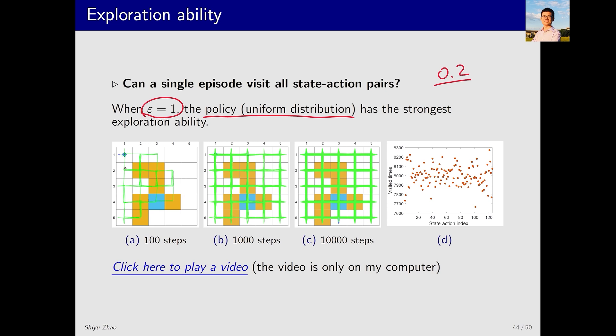Let's generate an episode based on the policy from here. If the episode consists of only 100 steps, we see that many states can be visited. With 1,000 steps, almost all states and their corresponding actions can be explored. With 10,000 steps, the states and actions can be visited many times.